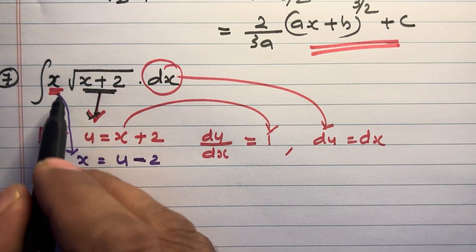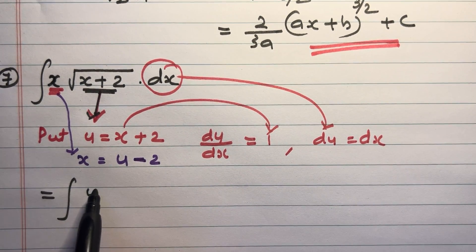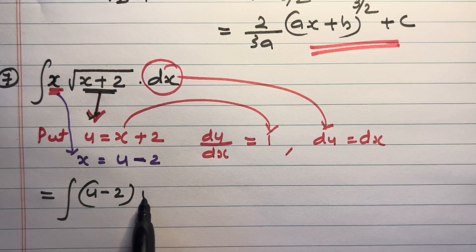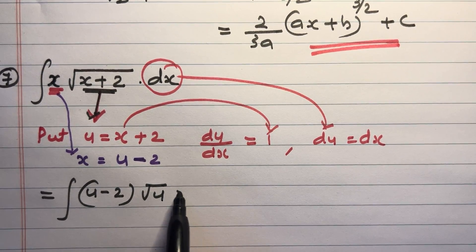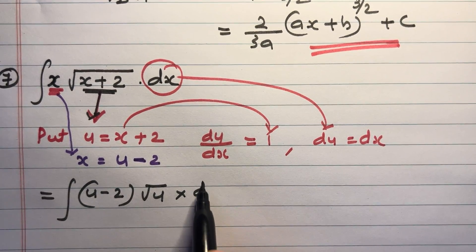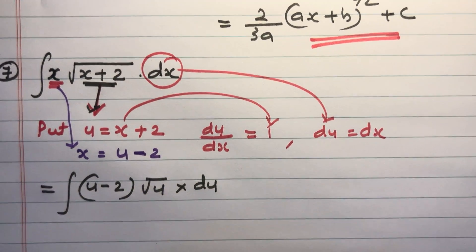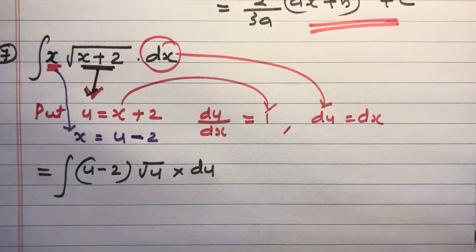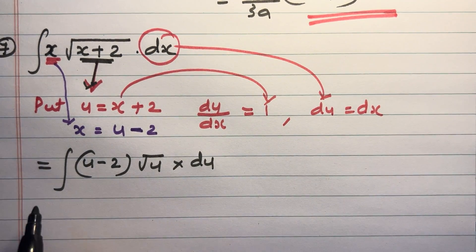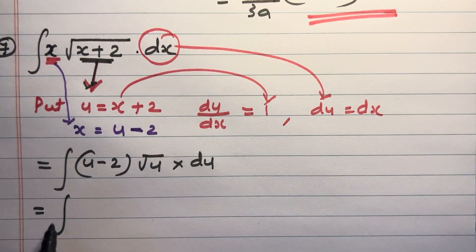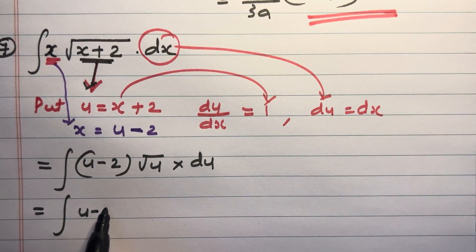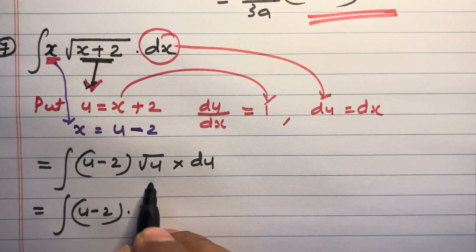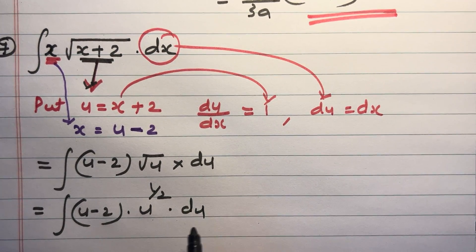So the integral becomes the integral of u minus 2, into root u, into du. Since x plus 2 is u, root u is u raised to 1 by 2. This can be written as the integral of u minus 2, into u raised to 1 by 2, du.